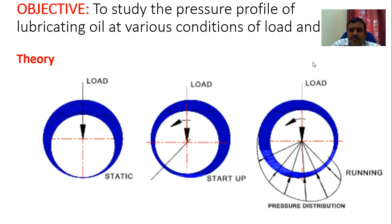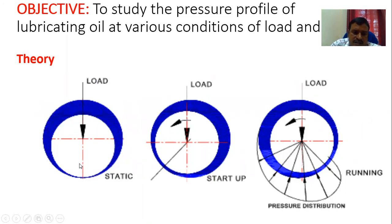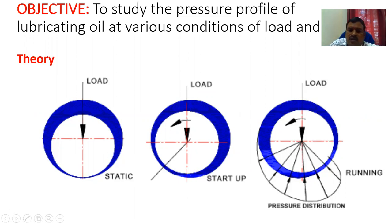Let's try to understand the theory. The blue color shown represents the lubricating oil. The load will be applied in the vertically downward direction, perpendicular to the shaft length. Once the shaft starts rotating, it will move towards either the right or left side due to starting conditions, and the resultant force will be somewhere on that side. This may be identified by seeing the thickness of the oil in the journal bearing.